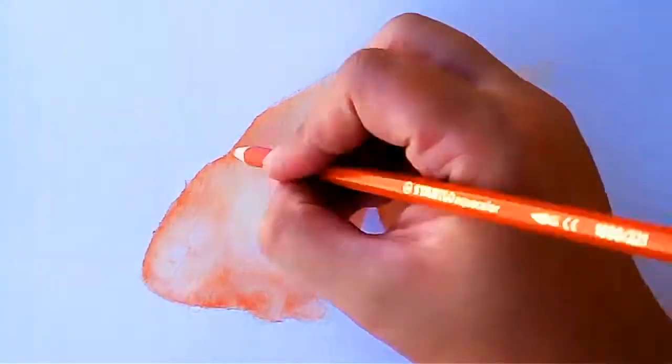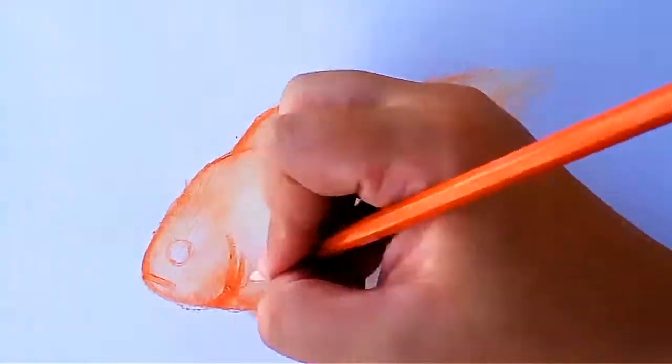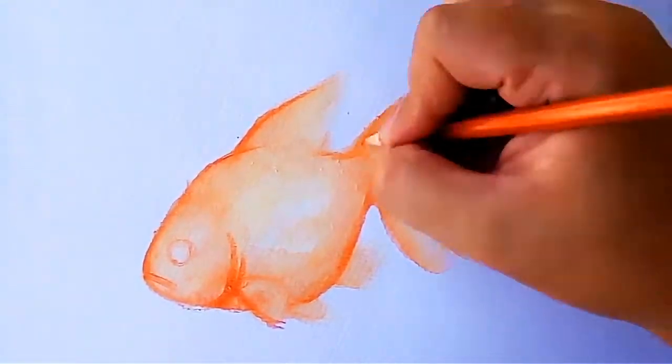Once the paper is dry, I use the orange pencil again to add the lines and details, mostly on the fins and scales.